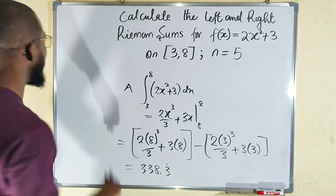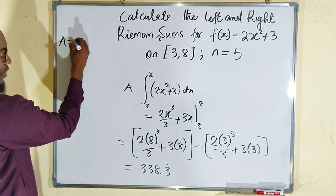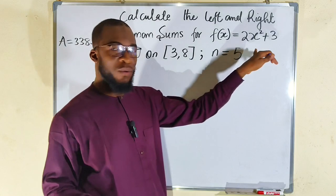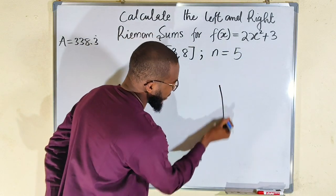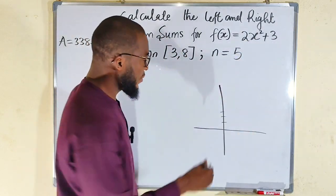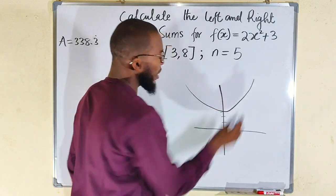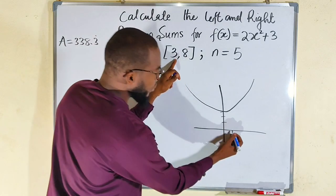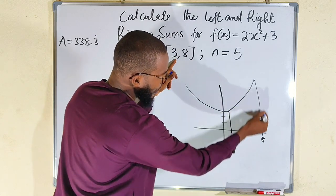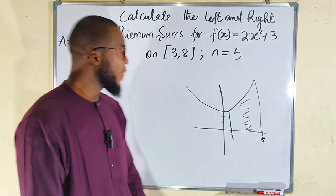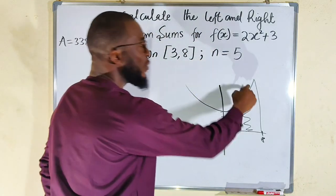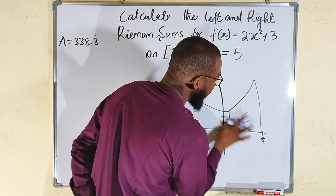So our actual area is 338.3 recurring. Now let me show you how the graph of this function looks like. The y-intercept is 3 and it is a parabola. We are talking about the area from x equals 3 to x equals 8 — that region under the curve. By approximation using Riemann sums, we are going to inscribe five rectangles.